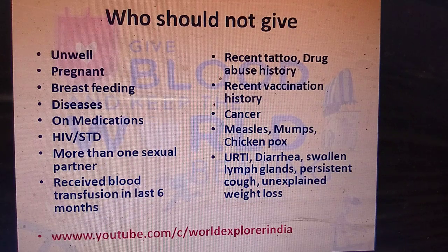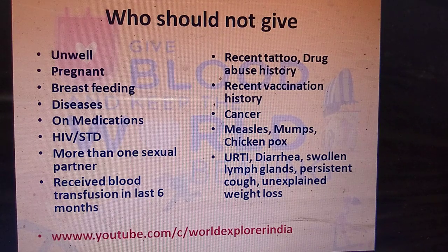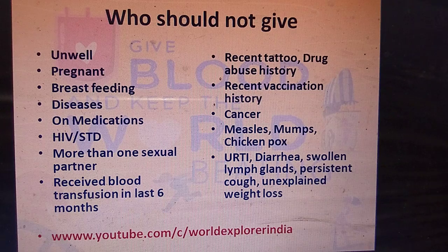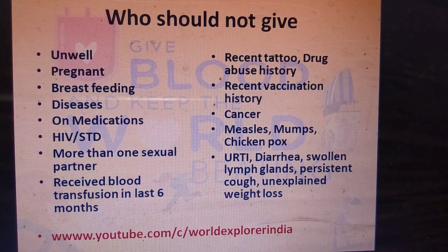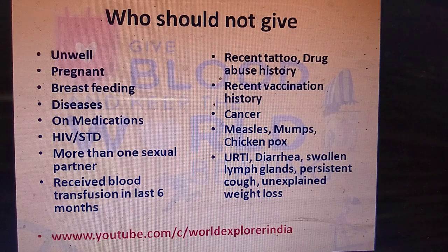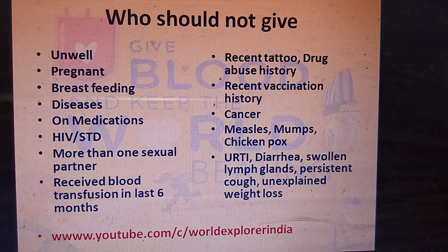Persons who should not donate blood include those who are unwell, pregnant, or breastfeeding; those on antibiotics or treatment for underlying diseases; and those with HIV, STDs, measles, mumps, chickenpox, or cancer. A person with more than one sexual partner is at high risk of HIV and should not donate. Also excluded are those who received a blood transfusion in the last six months, or have a recent tattoo, drug abuse history, recent vaccination, URTI, diarrhea, swollen lymph glands, persistent cough, or unexplained weight loss.